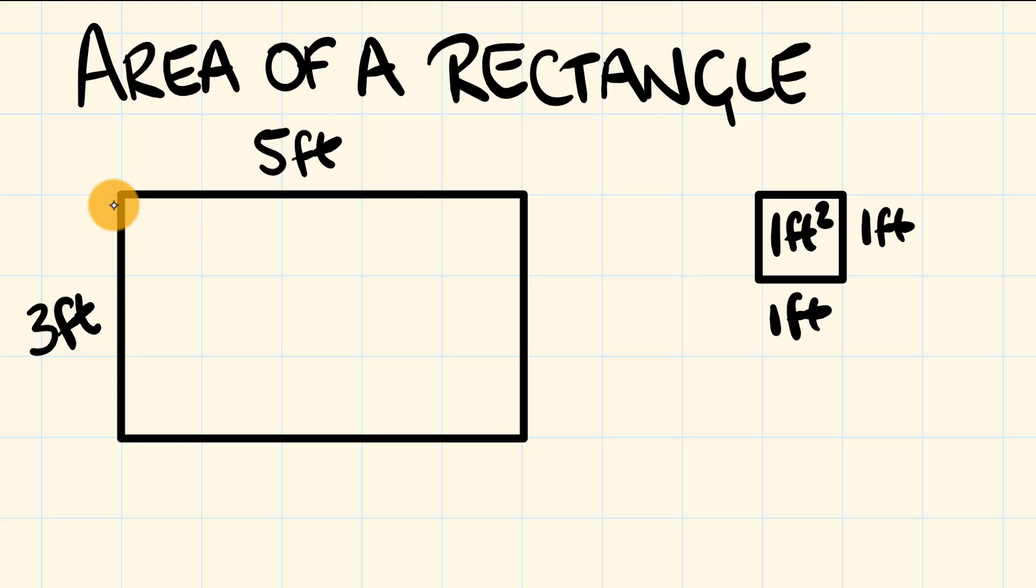So for this rectangle which measures five feet by three feet, we can work out its area by using the following formula. Area is equal to the length multiplied by the width. So as you can see here, we have a length of five feet and a width of three feet. So the area is going to equal five feet multiplied by three feet.